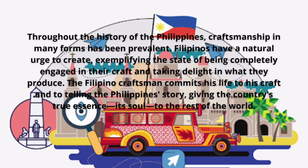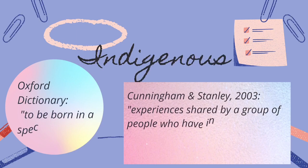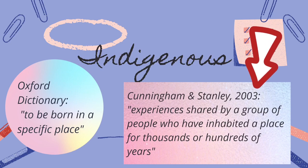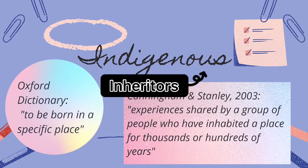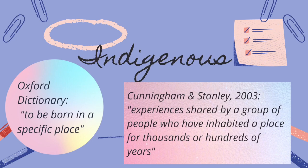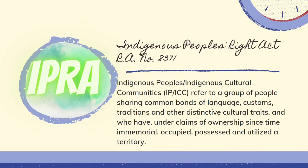Now let us try to define the concept of indigenous. The Concise Oxford Dictionary defines indigenous as to be born in a specific place, but this term has a number of usages. It also refers to the experiences shared by a group of people who have inhabited a place for thousands or hundreds of years. Indigenous people are inheritors and practitioners of distinct cultures and methods of interacting with others and the environment. They have kept social, cultural, economic, and political qualities that differ from the dominant societies in which they dwell.